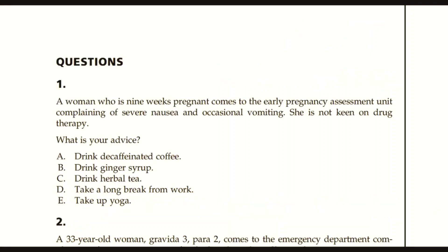Question number one: A woman who is nine weeks pregnant comes to the early pregnancy assessment unit complaining of severe nausea and occasional vomiting. She is not keen on drug therapy. What would you advise? Options: A) drink decaffeinated coffee, B) drink ginger syrup, C) drink herbal tea, D) take a long break from work, E) take up yoga. We need to find the answer.